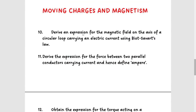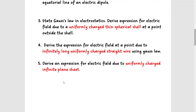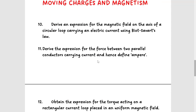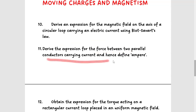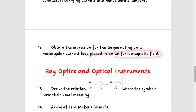The next chapter is moving charges and magnetism. There are three important derivations. The tenth derivation: derive the expression for magnetic field on the axis of a circular loop carrying electric current using Biot-Savart law. The eleventh derivation: derive the expression for force between two parallel conductors carrying current, and hence define one ampere. The twelfth derivation: obtain the expression for torque acting on a rectangular current loop placed in a uniform magnetic field. These three derivations are important.